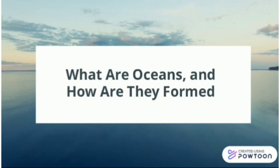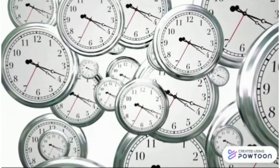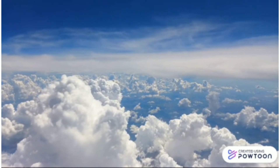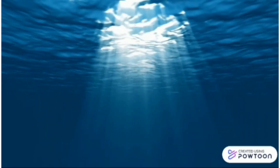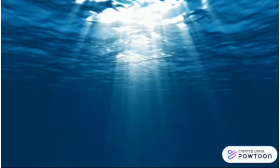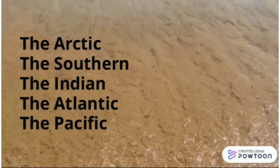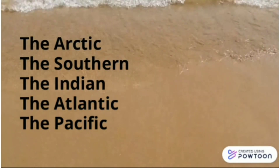Now let's have a look at oceans and how they were formed. Over vast periods of time, our primitive oceans formed. Water remained gas until the Earth cooled below 212 degrees Fahrenheit. At this time, about 3.8 billion years ago, the water condensed into rain, which filled the basins that are now known as our oceans. We have five oceans which are all connected together: the Arctic Ocean, the Southern Ocean, the Indian Ocean, the Atlantic Ocean and the Pacific Ocean.